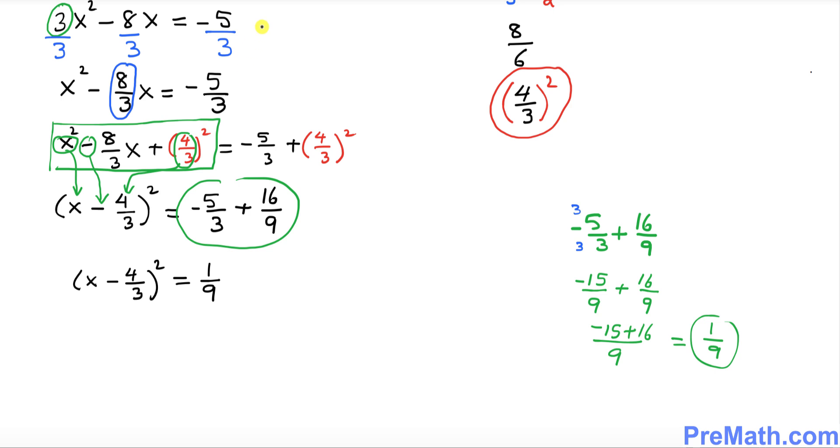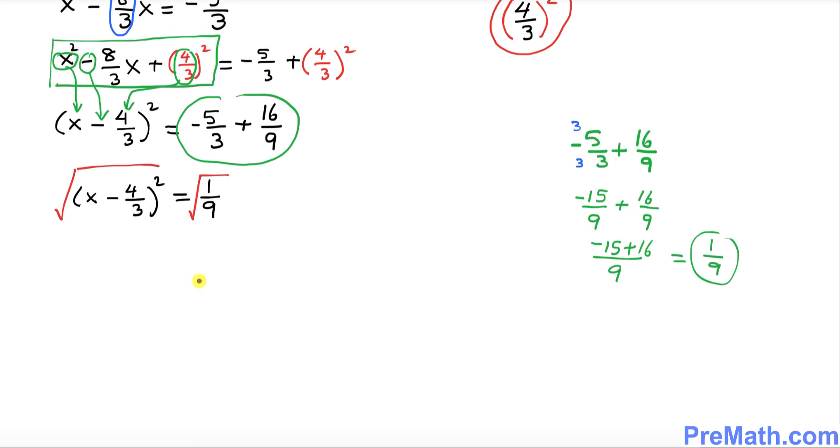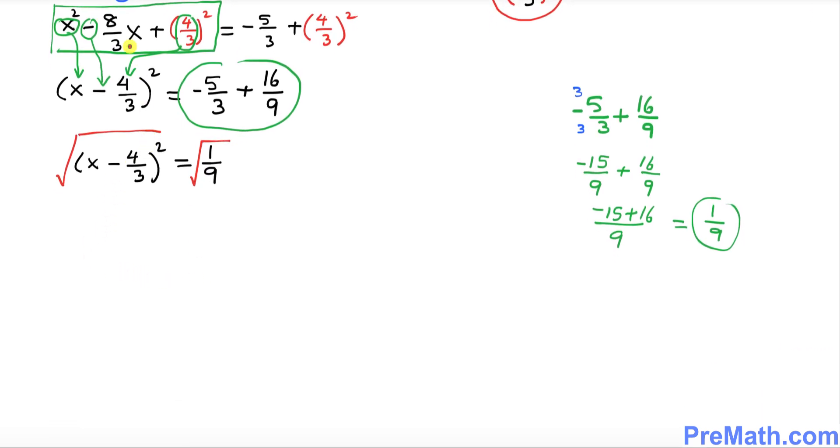Now we want to solve for x. So we're going to want to remove this square. How you can undo this square by taking the square root on both sides. This square and square root they undo each other. So we got x minus 4 over 3 equals to positive or negative. Square root of 1 is 1 divided by square root of 9 is 3.